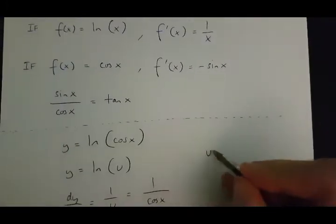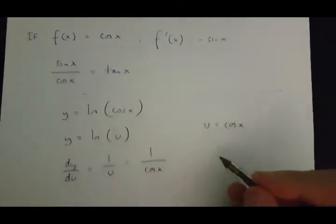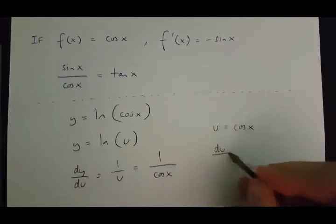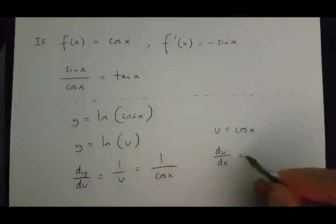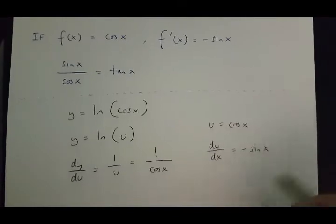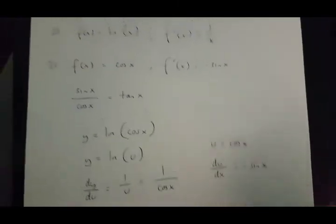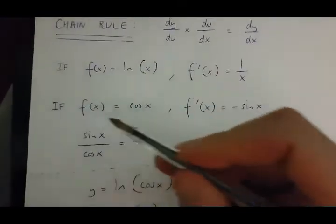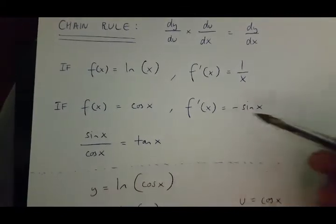Now, if u is cos x, then du over dx is going to be equal to minus sin x. And this is because of this rule over here.